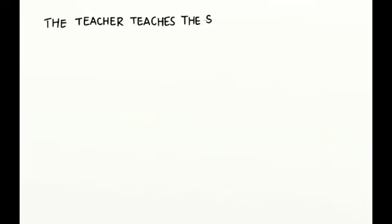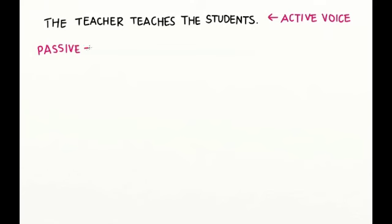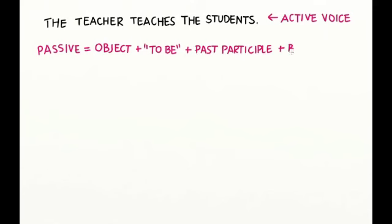The teacher teaches the students is an active sentence because the subject comes before the verb and the object. To change this to passive, we would put the object first, plus a form of to be, plus the past participle of the verb, plus by, plus the subject. The subject is optional in passive voice.